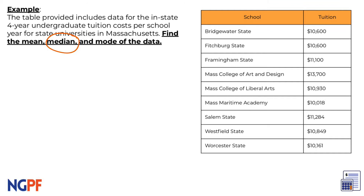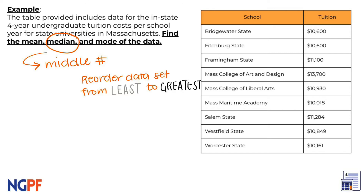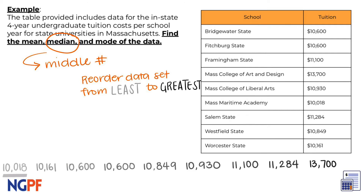Next up, let's find our median. The median of a data set is the middle value of all the numbers once they are ordered from least to greatest. First, I'm going to rearrange the prices. We see that least is over here and greatest is over here. Then I need to find the middle value. For this data set, the middle number is $10,849, as there are four data points on the left and four on the right.